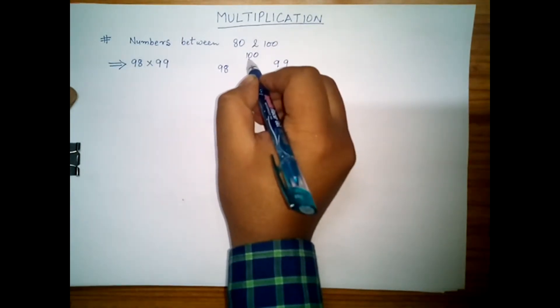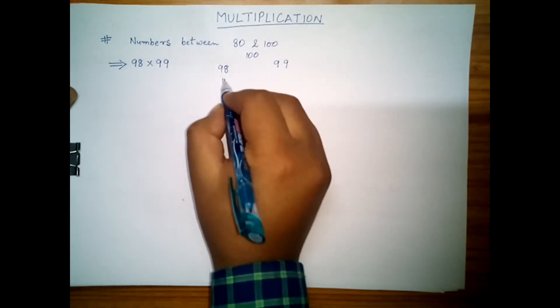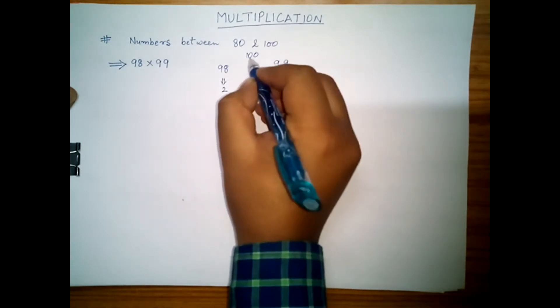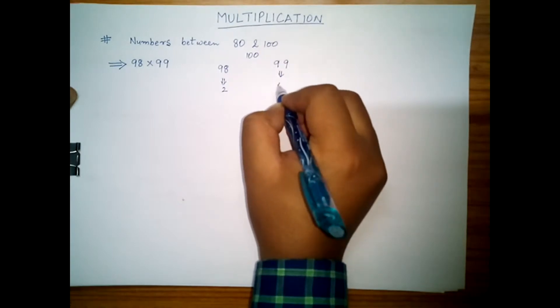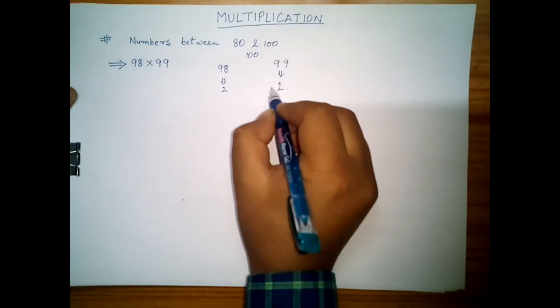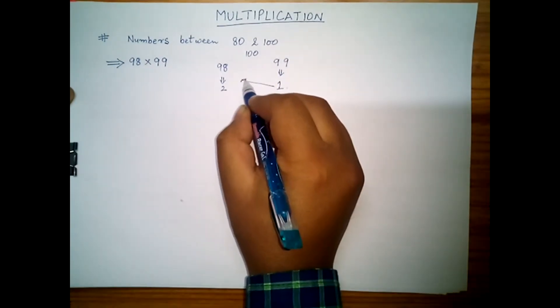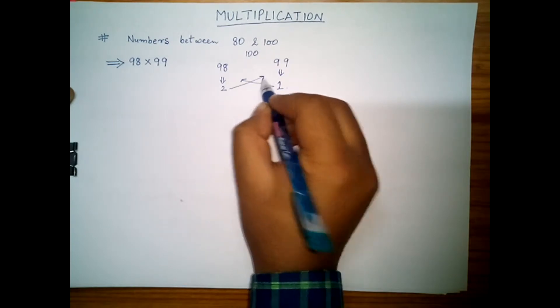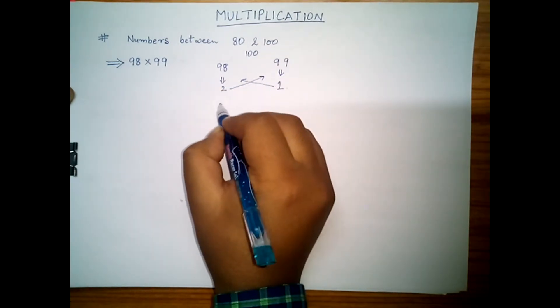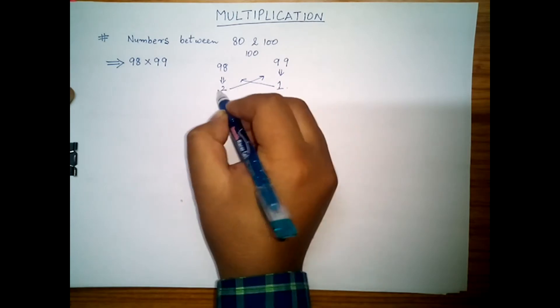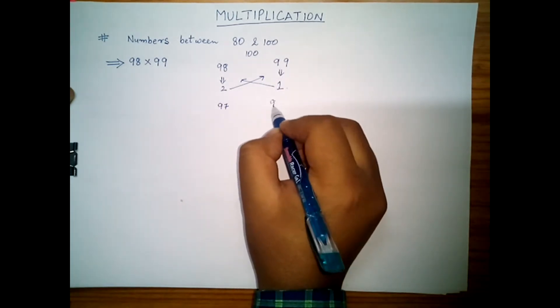The difference between 100 and 98 is 2, and similarly for 99 it is 1. Now interchange these two digits and find the difference: 98 minus 1 equals 97, and 99 minus 2 equals 97.